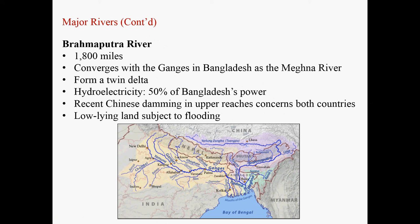The Brahmaputra River is 1,800 miles long and originated in southern Tibet. It flows east first, then makes a sudden turn to the south, entering India, then flows west again, then south into Bangladesh. Within Bangladesh, it converges with the Ganges River, forming the Meghna River.